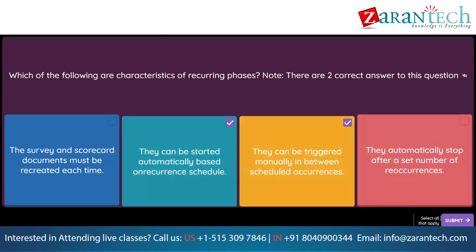Question. Your customer has recently renewed a contract with a supplier. As part of this process, the target for their on-time delivery KPI has increased to 96%. What should the customer update to reflect this change for future performance reviews? Option 1: The master survey and scorecard in the related supplier performance management project. Option 2: The KPI library content document in the sourcing library. Option 3: The survey and scorecard for the next recurrence period. Option 4: The master survey and scorecard in the supplier performance management project template.